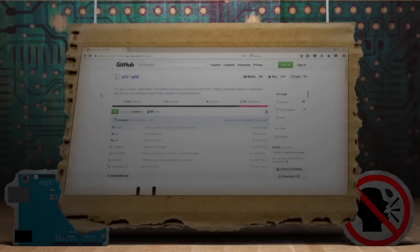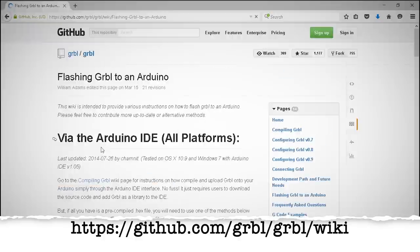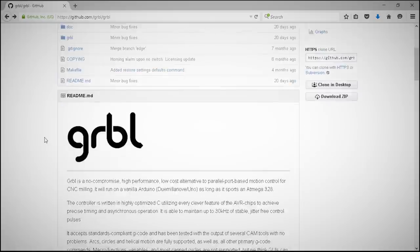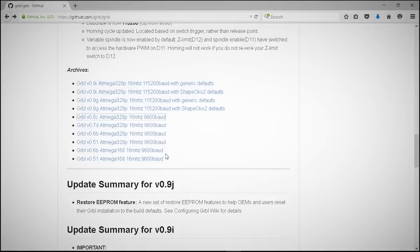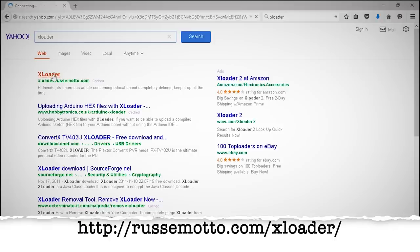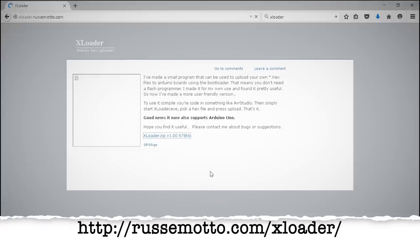You can find the Gerbil website here, and it lists many different ways to install it on the Arduino, but here's what worked for me. On the Gerbil page, I right-clicked and saved the version 0.8c hex file for Arduino Uno. Then I also downloaded XLoader from this website to burn it to the Arduino.